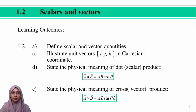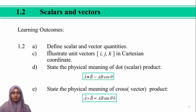Now it comes to the second subtopic of this chapter. There are four learning outcomes to cover: to define scalar and vector quantities, to illustrate unit vectors in Cartesian coordinates, to state the physical meaning of scalar product, and lastly to state the physical meaning of vector product.